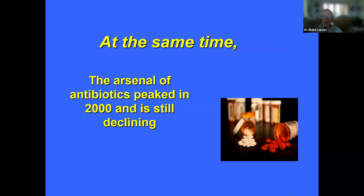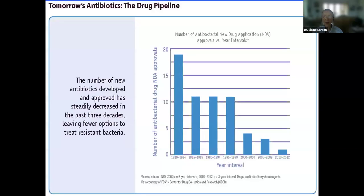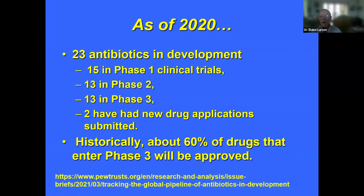At the same time, the arsenal of antibiotics peaked in 2000 and is still declining. The number of new antibacterial drug applications approved was high in the 1980s but had been reduced to almost zero by 2012. As of 2020, 23 antibiotics were in development: 15 in phase one clinical trials, 13 in phase two, 13 in phase three, and two with new drug applications submitted. Historically, about 60% of drugs that enter phase three will ultimately be approved. The antibiotic pipeline has slowed considerably since the 1980s.